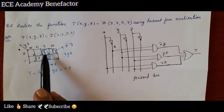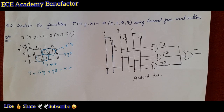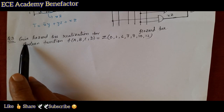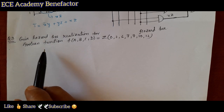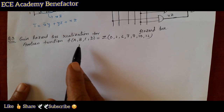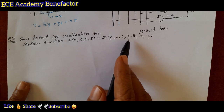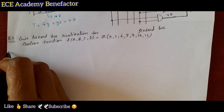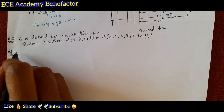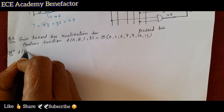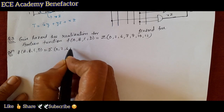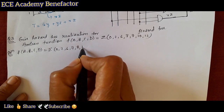We have three pairs, and making it hazard-free required one overlapping pair. Let us switch to the third problem. The given problem is: give hazard-free realization for the Boolean function f(a,b,c,d) = Σ(0, 2, 6, 7, 8, 10, 12). Let us start the solution. The first step is to write out the Boolean function f(a,b,c,d) = Σ(0, 2, 6, 7, 8, 10, 12).